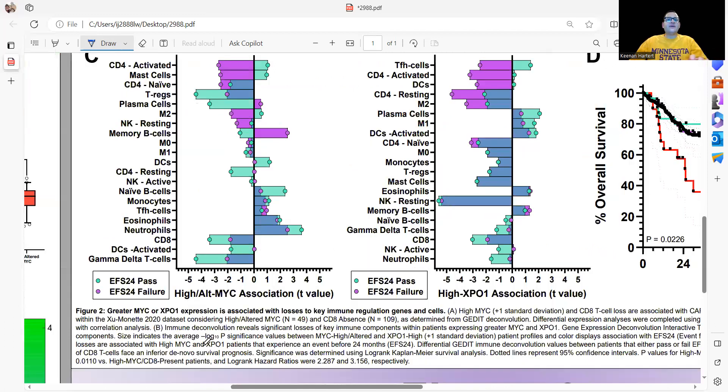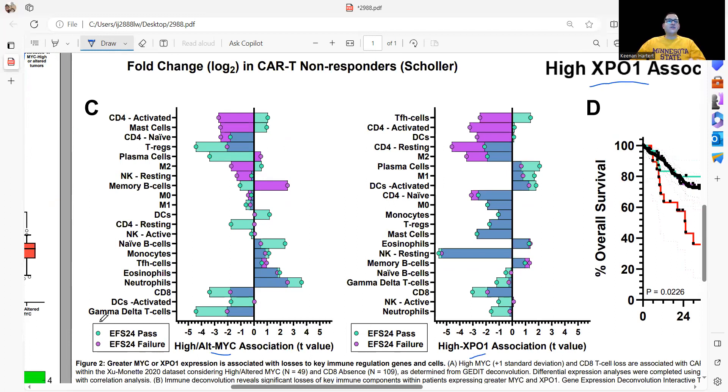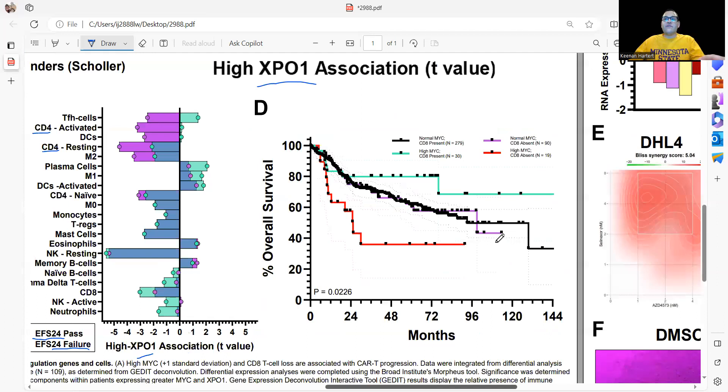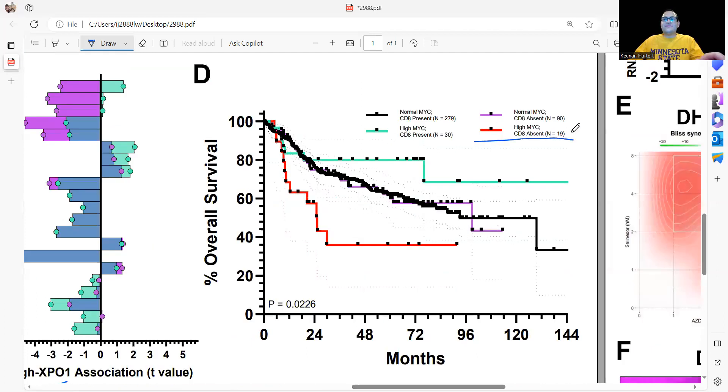Given that we have high MYC and high XPO1 associations, what happens if we look at patients within these smaller groups and examine which immune factors are present or absent in EFS24 pass versus failure? Although CD8s are still lost in both populations, it's the CD4 signatures in both cases that are really hitting hard when you're losing that battle within 24 months. Looking at the clinical curve, if you have high MYC and you're also losing CD8, that combination is perhaps the quickest ingredient set towards lethality.